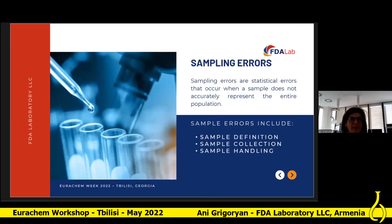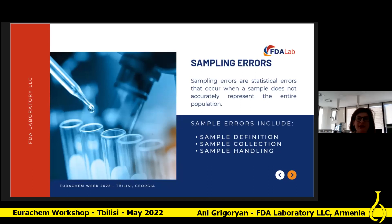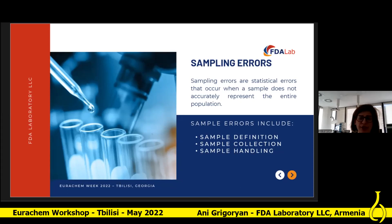An important part of estimation is estimating the magnitude of the sampling error. This provides a measure of the precision of the survey's estimates for the specific sample design. Sampling error can only be estimated in probability sampling. Sampling errors are statistical errors that occur when the sample does not accurately represent the entire population. The sampling error is caused by observing the sample instead of the whole population, arising from estimating population characteristics by looking at only one portion of the population rather than the entire population.